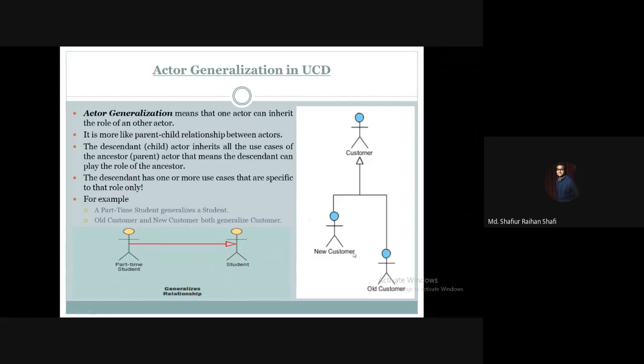New customer and old customer are child actors. They are specialists and the customer actor is more general. Customer is the parent actor and can be thought of as an abstract actor holding generic information, while new customer and old customer represent specific variants.